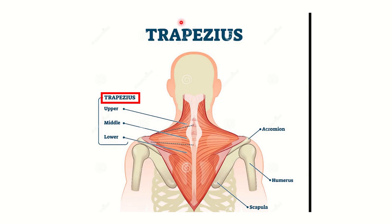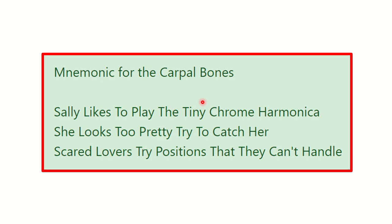Here we can see the trapezius muscle. It is a broad and large muscle with upper, middle, and lower parts. It attaches to different parts of the body — including the clavicle, the scapular portion, the spine, and different nuchal lines in the skull.